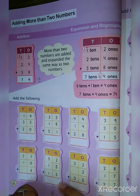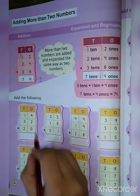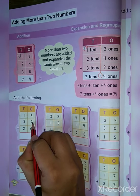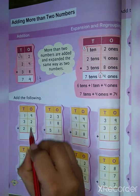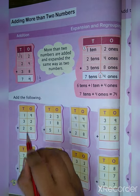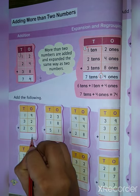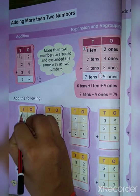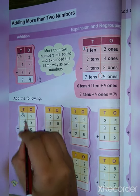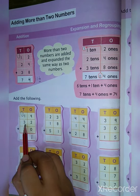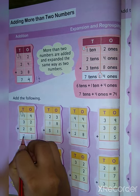Now next: add the following. 9 plus 2 is equal to 11. 11 plus 0 is equal to 11. So put here 1 and carry over 1. Then 1 plus 1 is 2, 2 plus 3 is 5, 5 plus 2 is equal to 7.